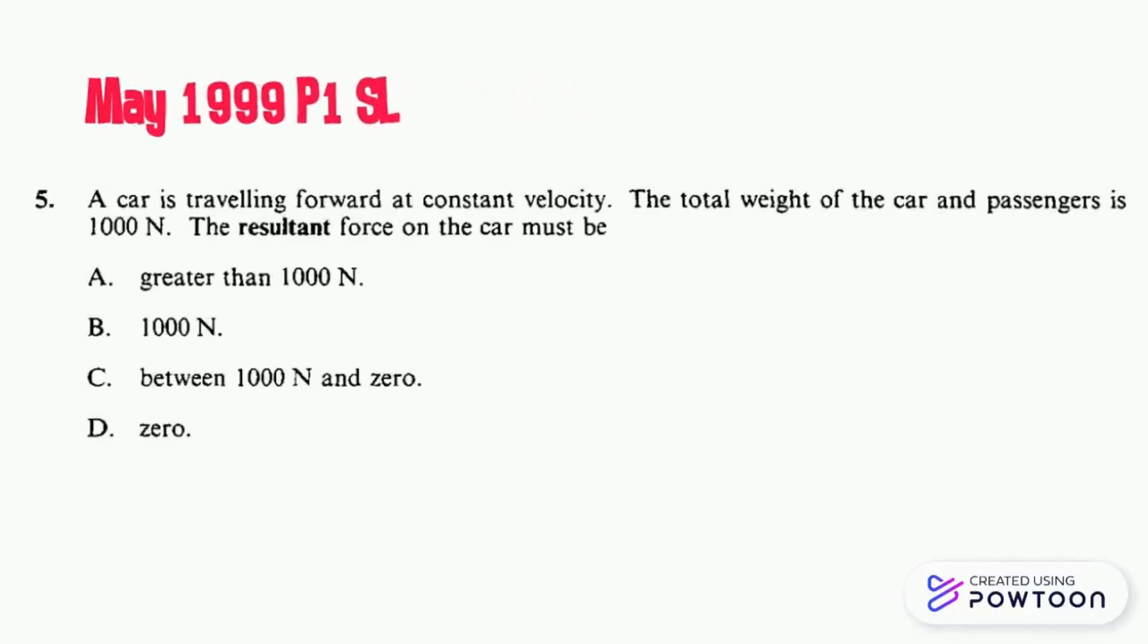Hi guys and welcome to our physics series. Today we have May 1999 Paper One Standard Level Question 5. A car is traveling forward at constant velocity. The total weight of the car and passengers is 1000 Newtons. The resultant force on the car must be?